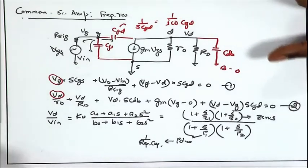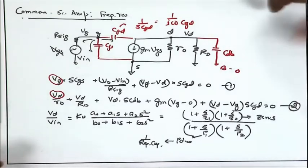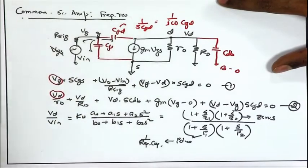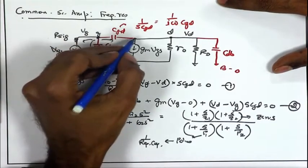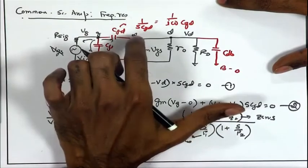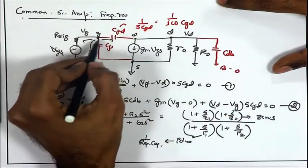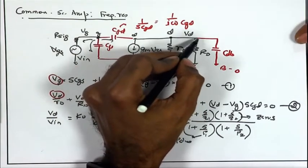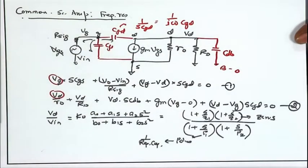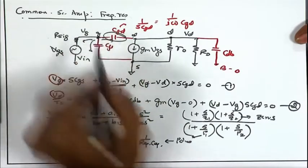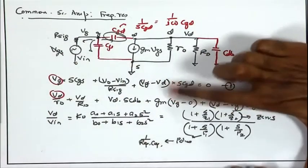One of the key steps involved in that approximation — and most of you might be aware of this — is dealing with the Miller effect. All we need to do is get rid of the capacitances connecting two different nodes and reduce them to capacitances connected between those nodes and AC ground. CGS is between gate and AC ground, CDB is between drain and AC ground, but CGD appears between two nodes of the circuit, leading to coupling between the two equations.